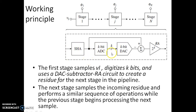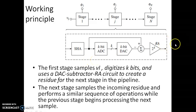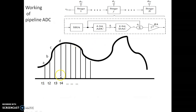Unlike sub-ranging, the first stage does not wait for the next stage to complete its process. As soon as the first stage completes its operation and passes the residue to the next stage, it is immediately ready to accept a new sample. It does not wait for whether the next stage has completed the process — the next stage does its work while the first stage starts a new process with the new input voltage.